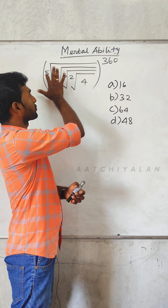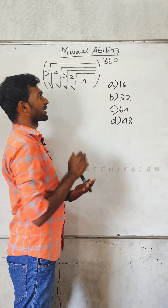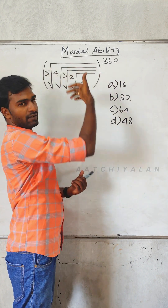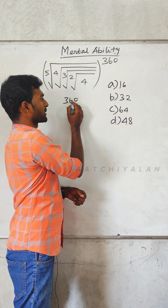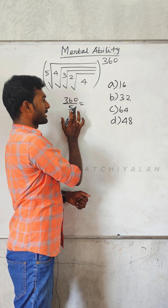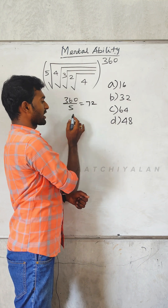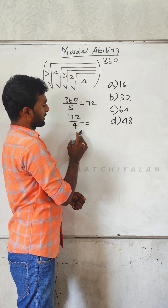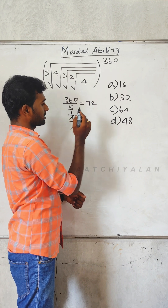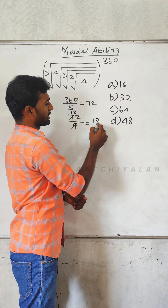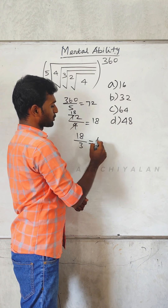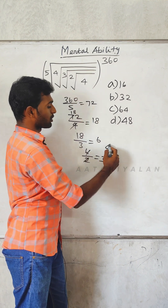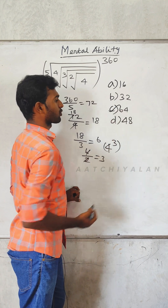These sums are given: 5th root, 4th root, cube root, square root of 4. What do you do? First number power: 360 power — that's the 5th root. 360 divided by 5 is 72. 72 — answer 8th root. 4th root: divide 72 by 4 is 18. 3rd root: divide 18 by 3 is 6. Cube root and square root: divide by 3. So the answer is 4³ equals 64.